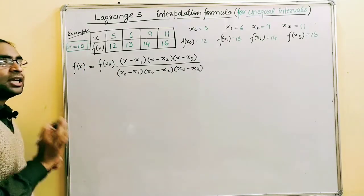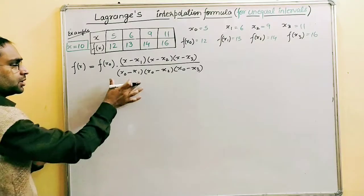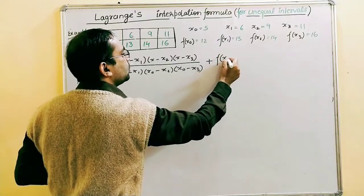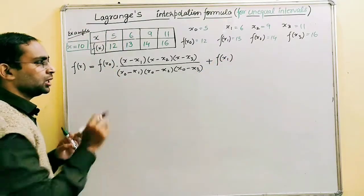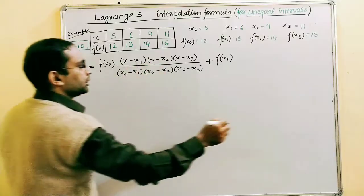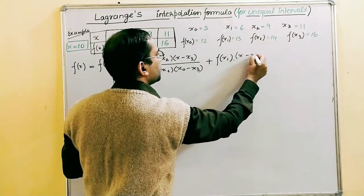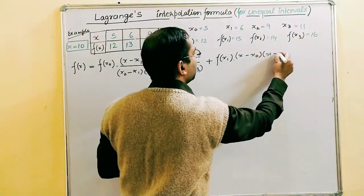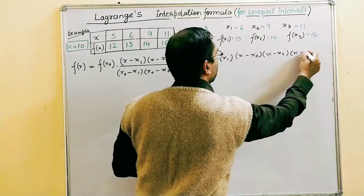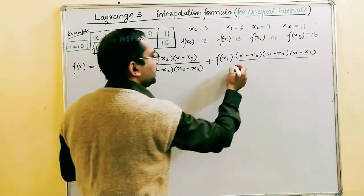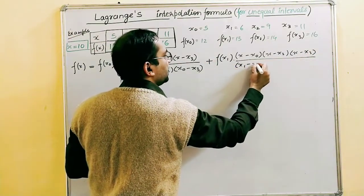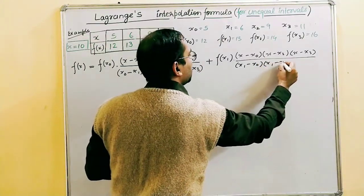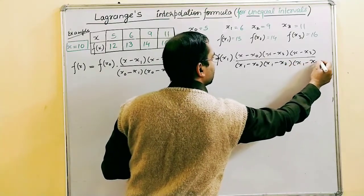The second term begins with f(x₁). The numerator is (x − x₀)(x − x₂)(x − x₃) — we skip (x − x₁). The denominator is (x₁ − x₀)(x₁ − x₂)(x₁ − x₃) — we skip (x₁ − x₁). This is the second term of the Lagrange formula.